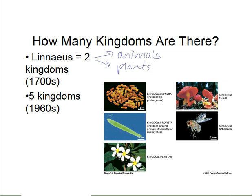As our understanding of organisms got better, and as investigation tools like microscopes and chemical analyses improved over the centuries, more complex classification schemes were proposed. One of the more commonly used schemes was proposed in the 1960s by Carl Woese. Woese looked at the chemical structure of a type of molecule inside cells and based on that came up with a classification scheme in which he said there were five different kingdoms.